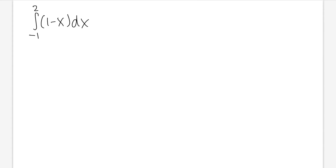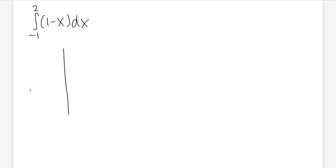I will show you how to take care of this integral by interpreting it with areas. First, we are going to grab this function. Let's put that down right here and put this into the y = mx + b form. So we have negative x plus 1.